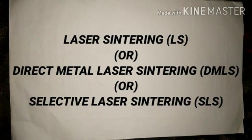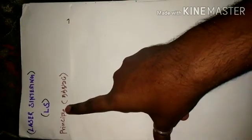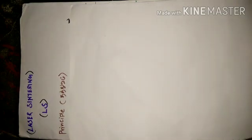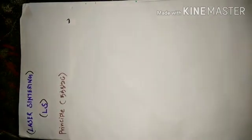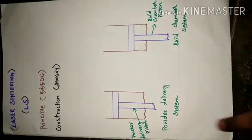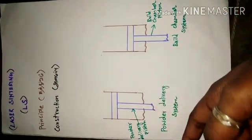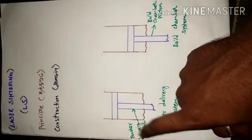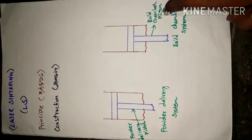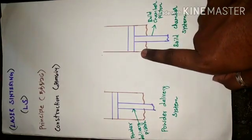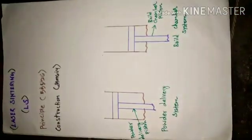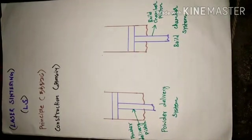First of all, the principle. A laser will be used on powder material to melt it, forming the first layer. This is a build chamber system — a cylinder and a piston. The name is the powder delivery piston and the build chamber piston. This is the powder delivery cylinder and this is the build chamber cylinder. First we will talk about this powder delivery system — the source of powder.